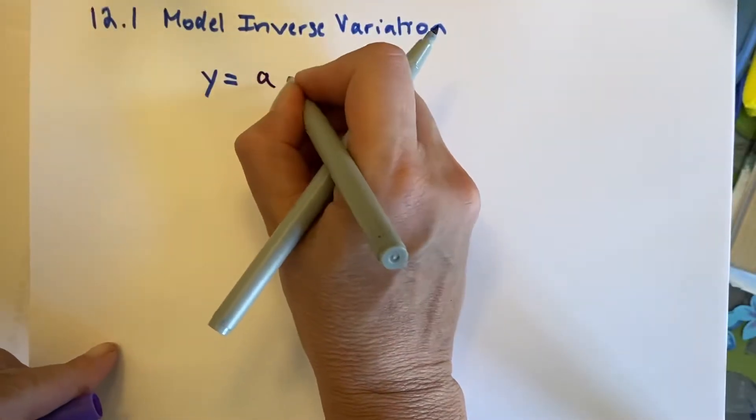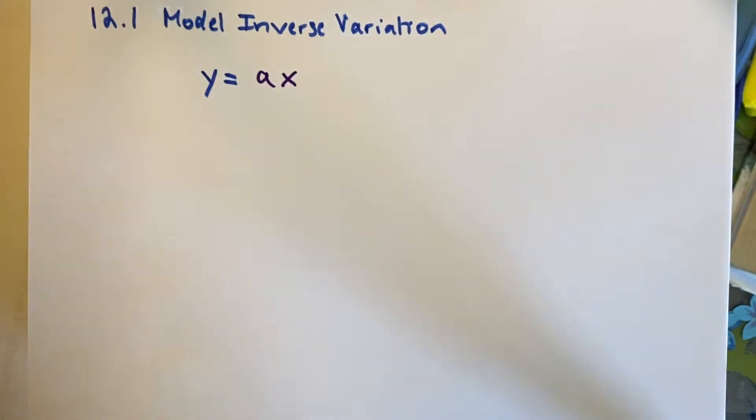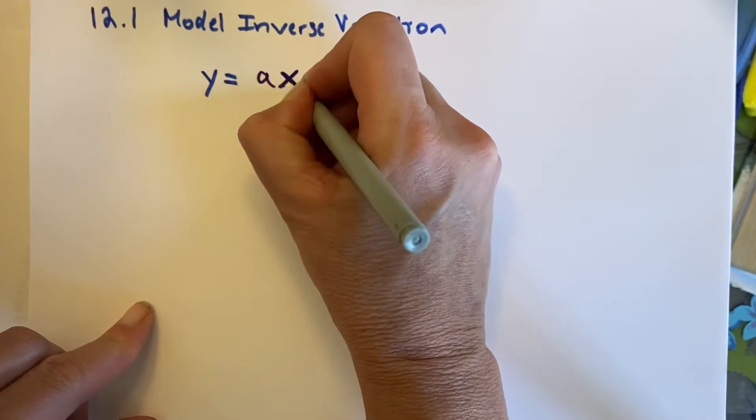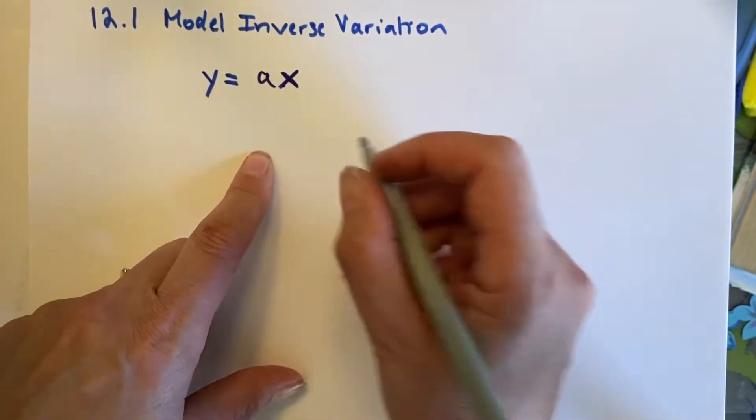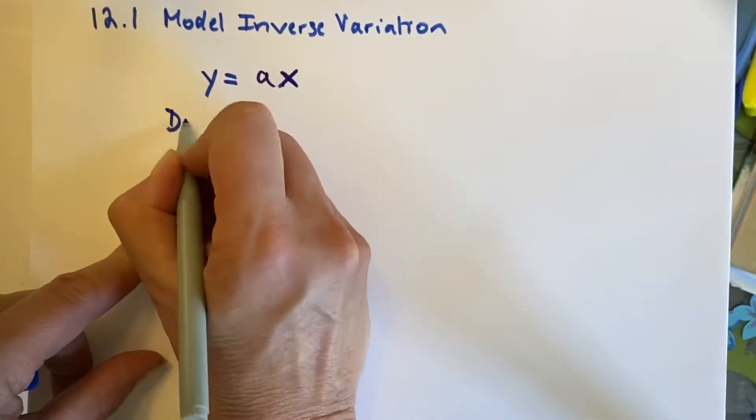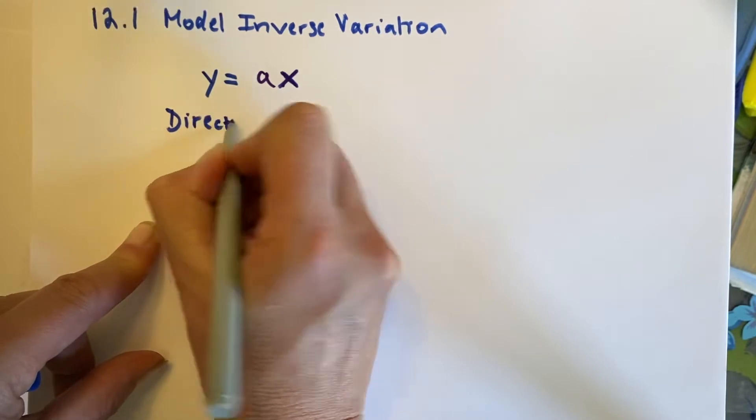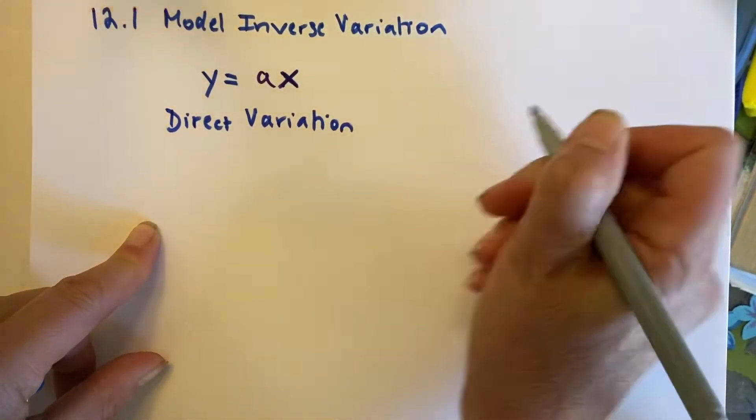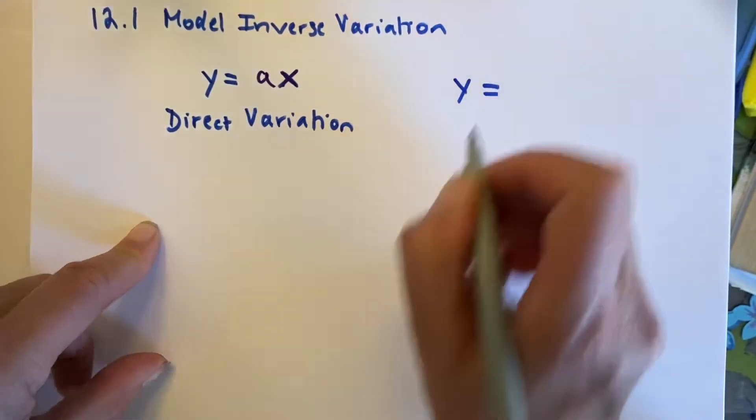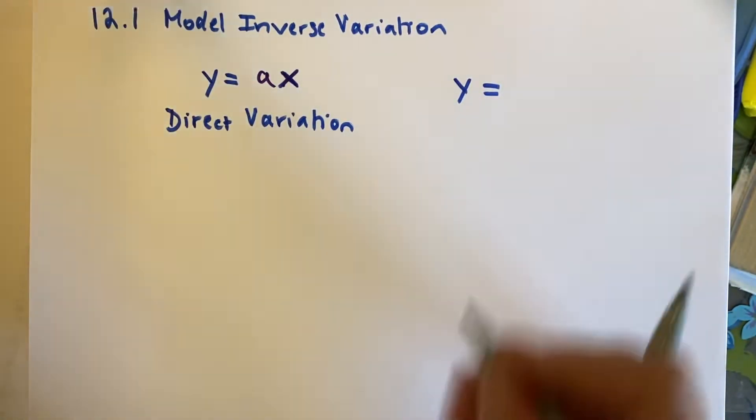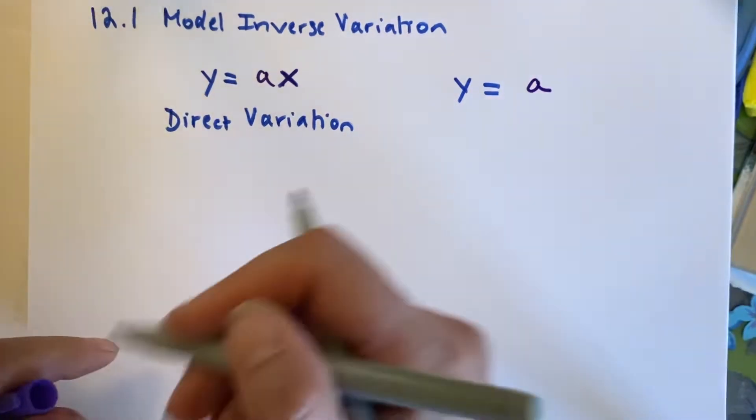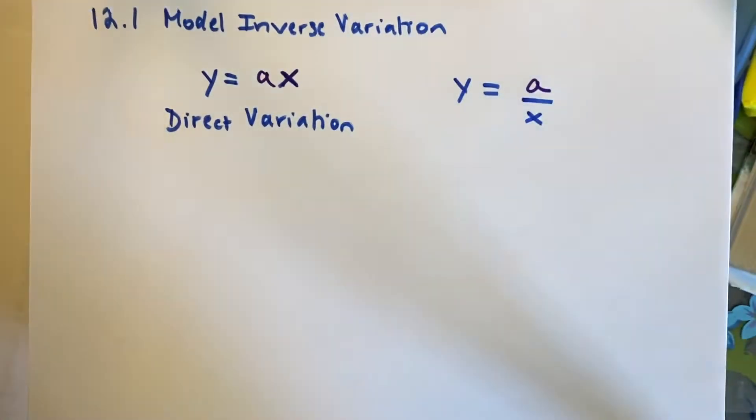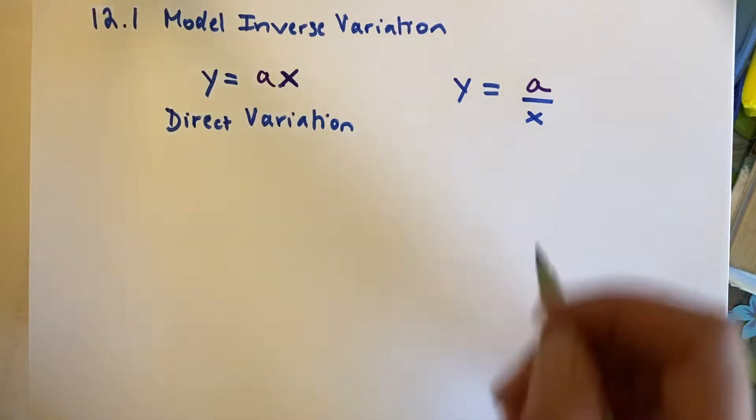So, y equals ax. I meant to put just the a in purple. y equals ax is direct variation. And y equals, I'm still going to have an a, but a divided by x is inverse variation.